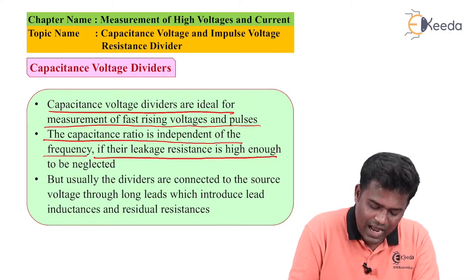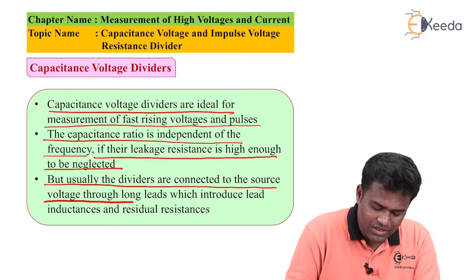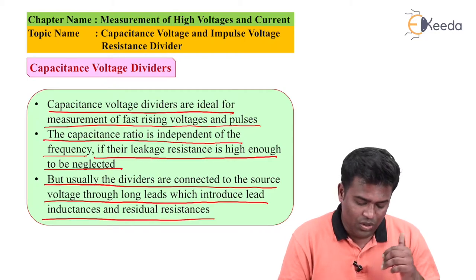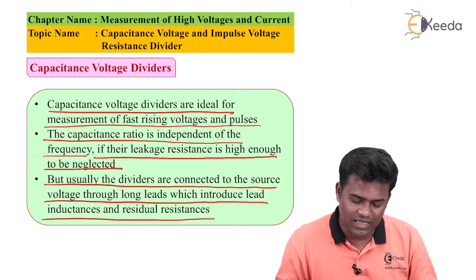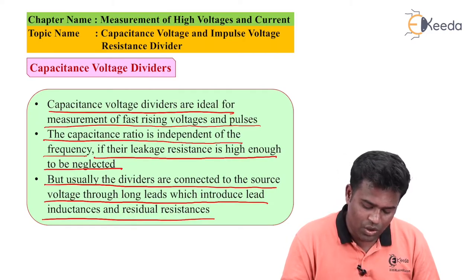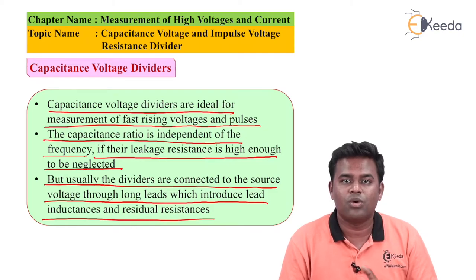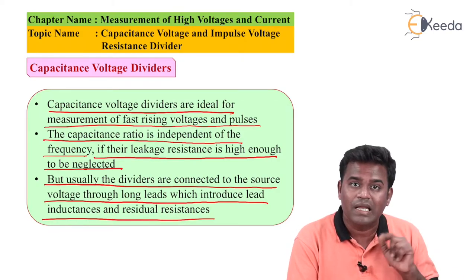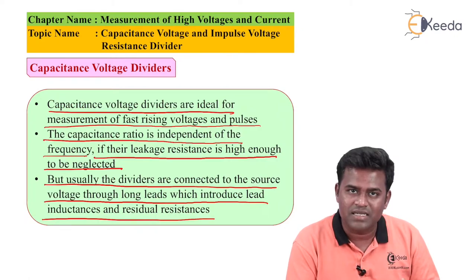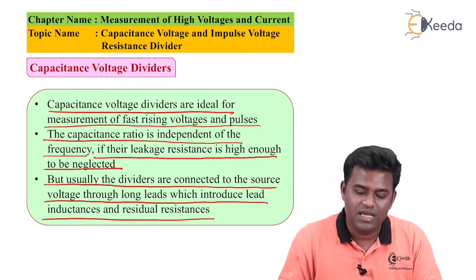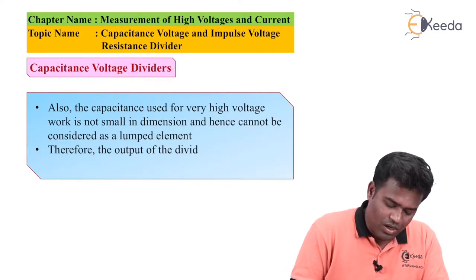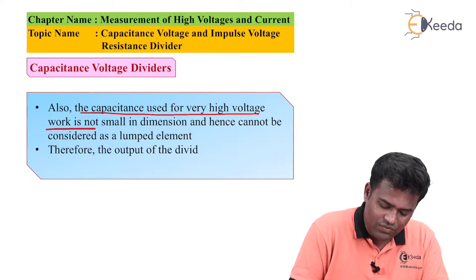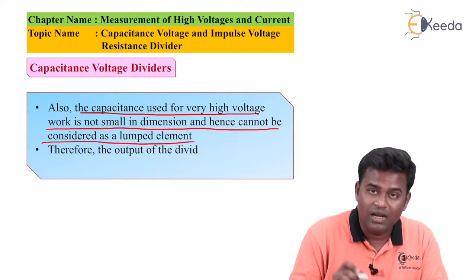If their leakage resistance is high enough to be neglected, usually the dividers are connected to the source voltage through long leads which introduce lead inductance and residual resistances. This applied voltage will include inductances in the system and residual resistances in the system. The capacitance used for very high voltage work is not small in dimension and hence cannot be considered as a lumped element.